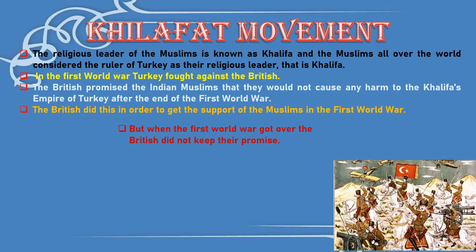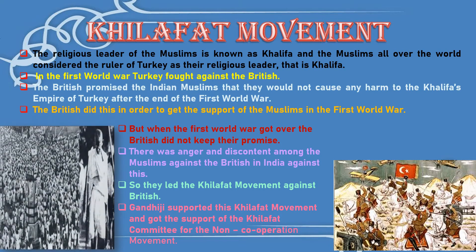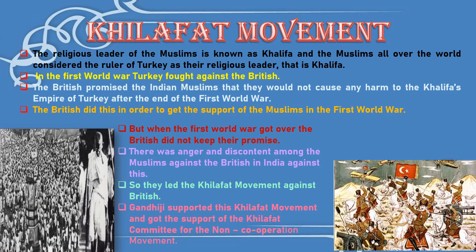But when the First World War got over, the British did not keep their promise. There was anger and discontent among the Muslims against the British in India, so they led the Khilafat Movement against the British. The movement started by Indian Muslims in support of the Khalifa is known as the Khilafat Movement. Gandhiji supported this Khilafat Movement and got the support of the Khilafat Committee for the non-cooperation movement. In this way, the Hindus and Muslims unitedly participated in the non-cooperation movement and gave a serious blow to the British.